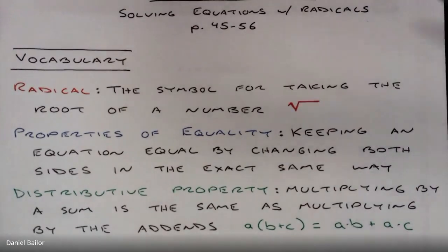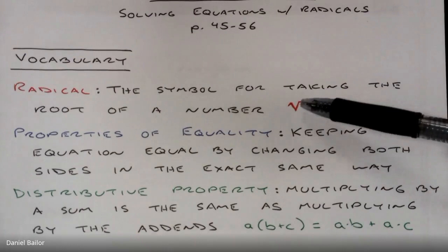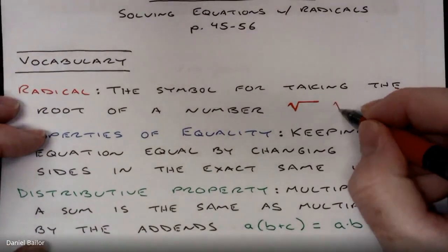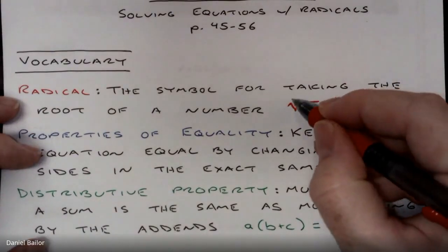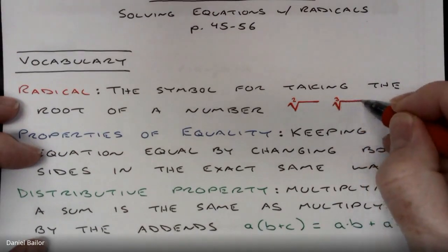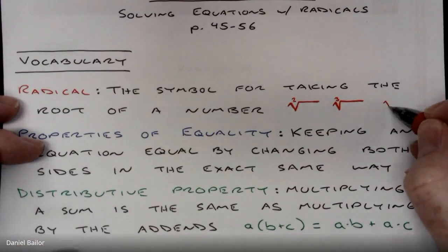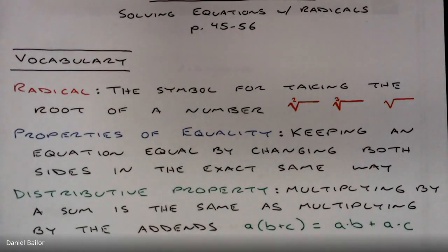Radical is what we've seen in this module — it's the symbol for taking the root of a number. This is the symbol for square root. If it is a cube root, there's a little 3 right there. There could be a 2, but mathematicians have agreed that if you're just doing square roots, you don't need the 2. The radical itself looks kind of like a check mark or a division symbol for long division.